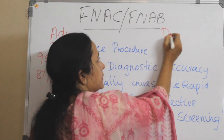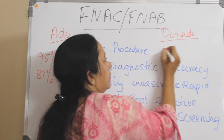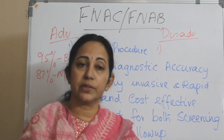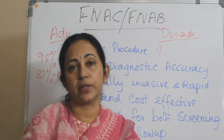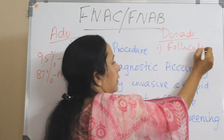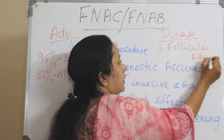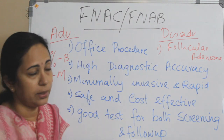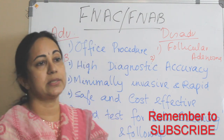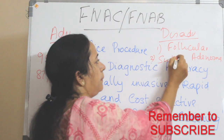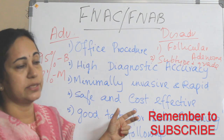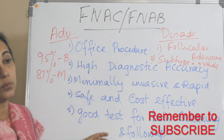FNAC also has some disadvantages. In thyroid nodules, it cannot differentiate between a follicular adenoma and a follicular carcinoma. So follicular adenoma cannot be differentiated from follicular carcinoma of thyroid. Second, we cannot determine tumor grading or malignant subtype — subtyping and grading cannot be done using fine needle aspiration cytology.